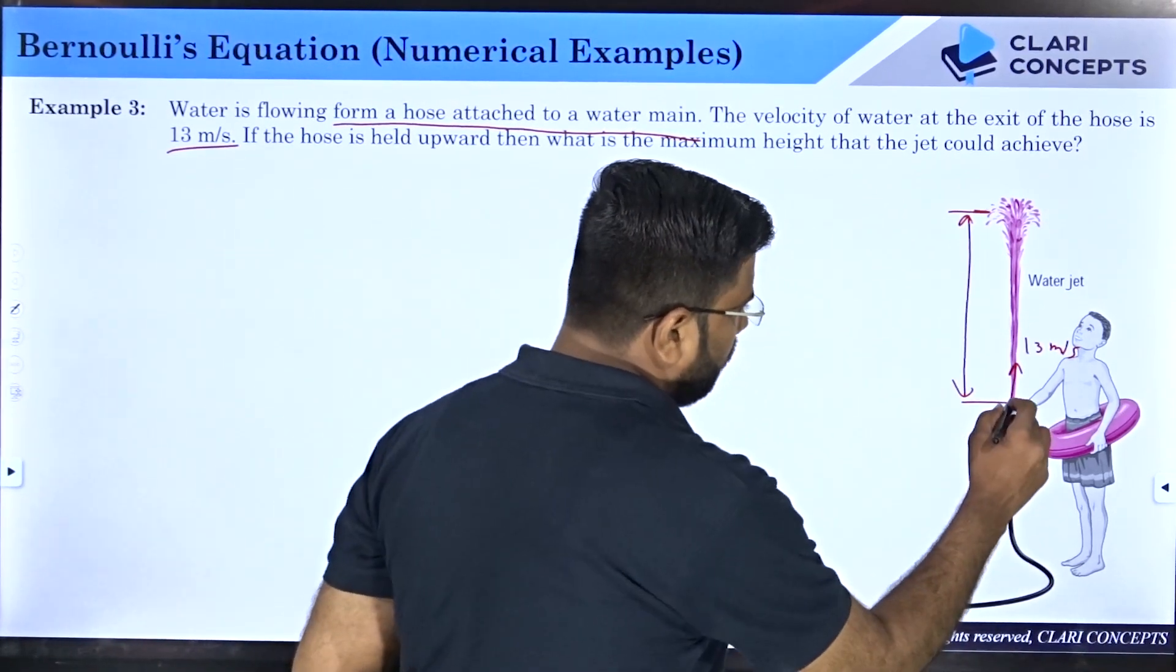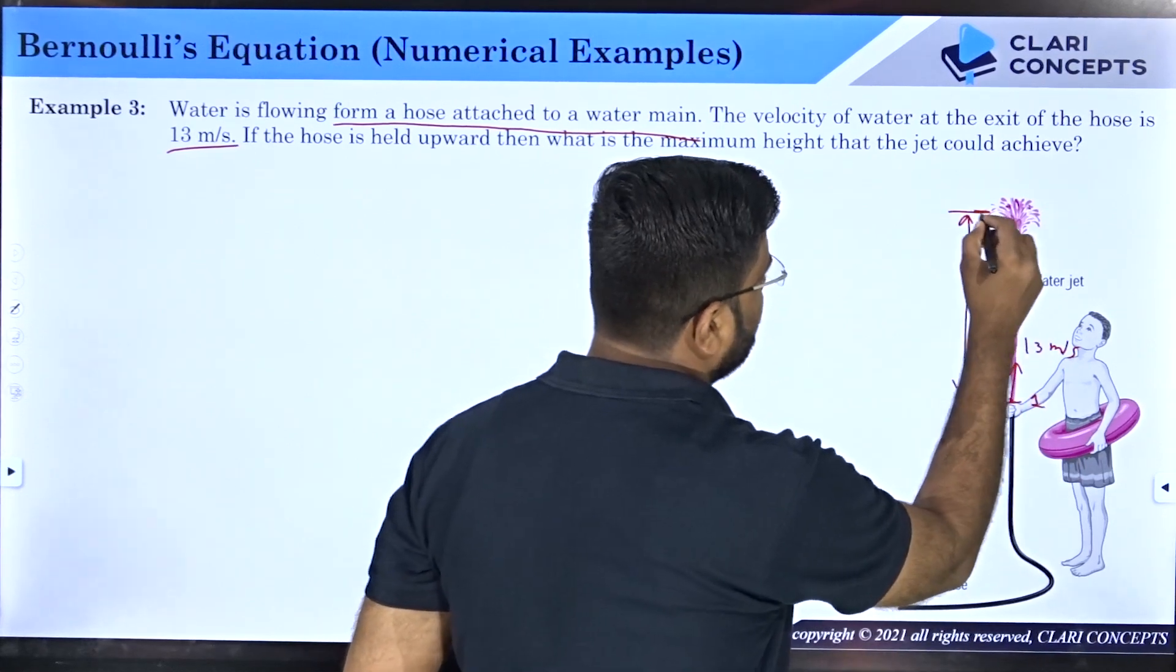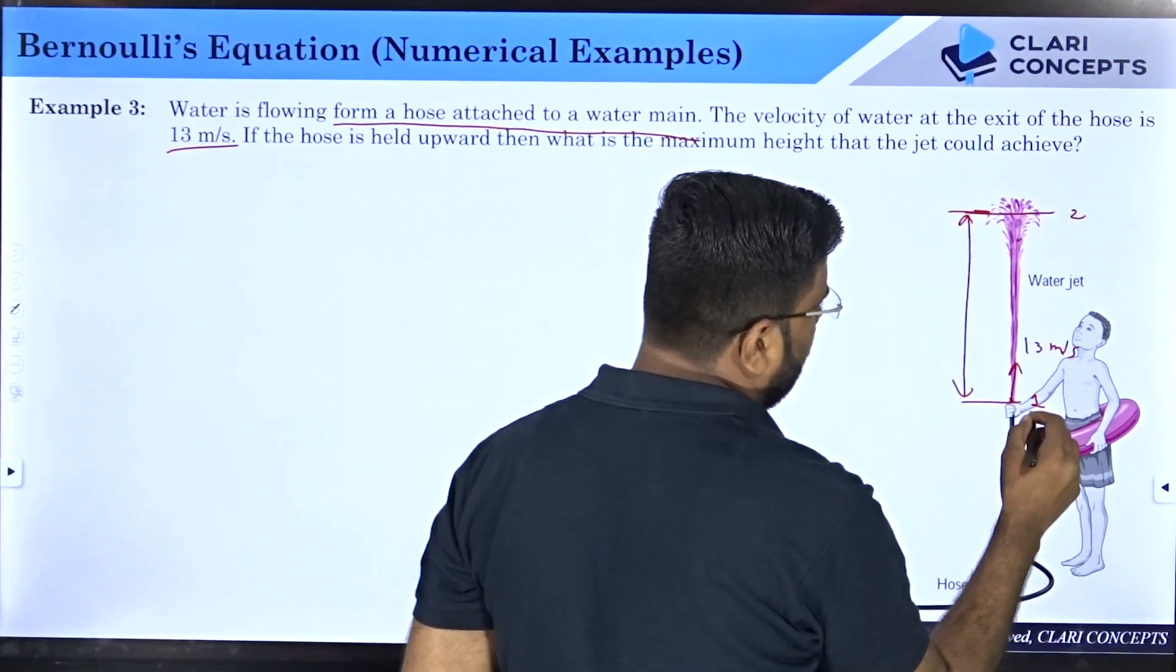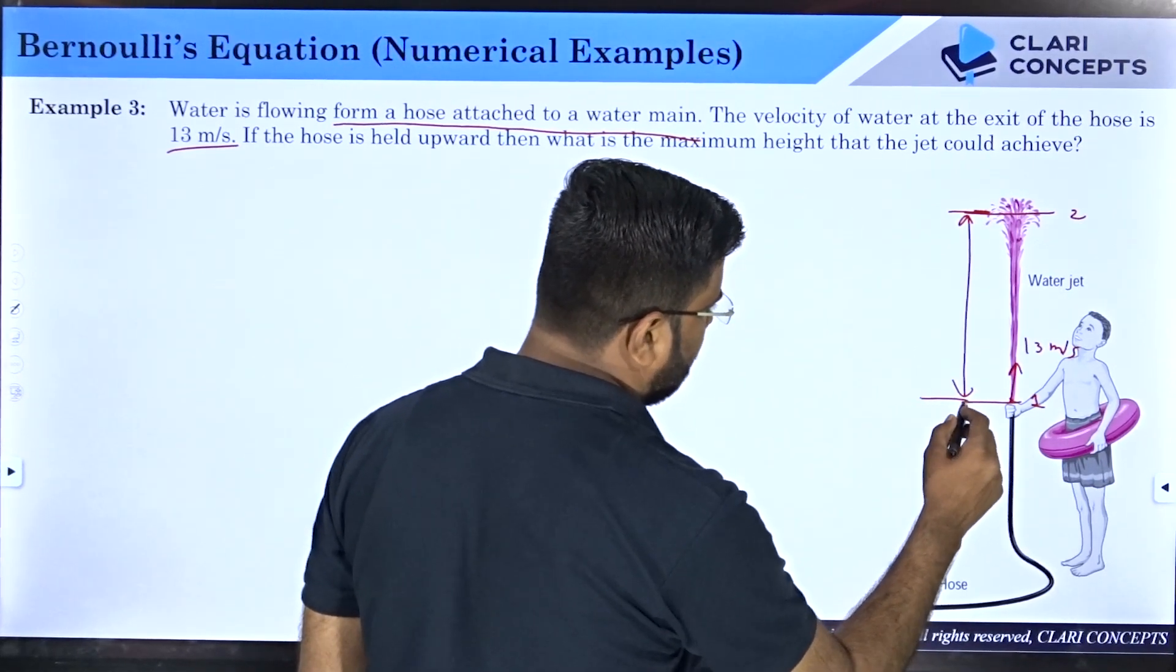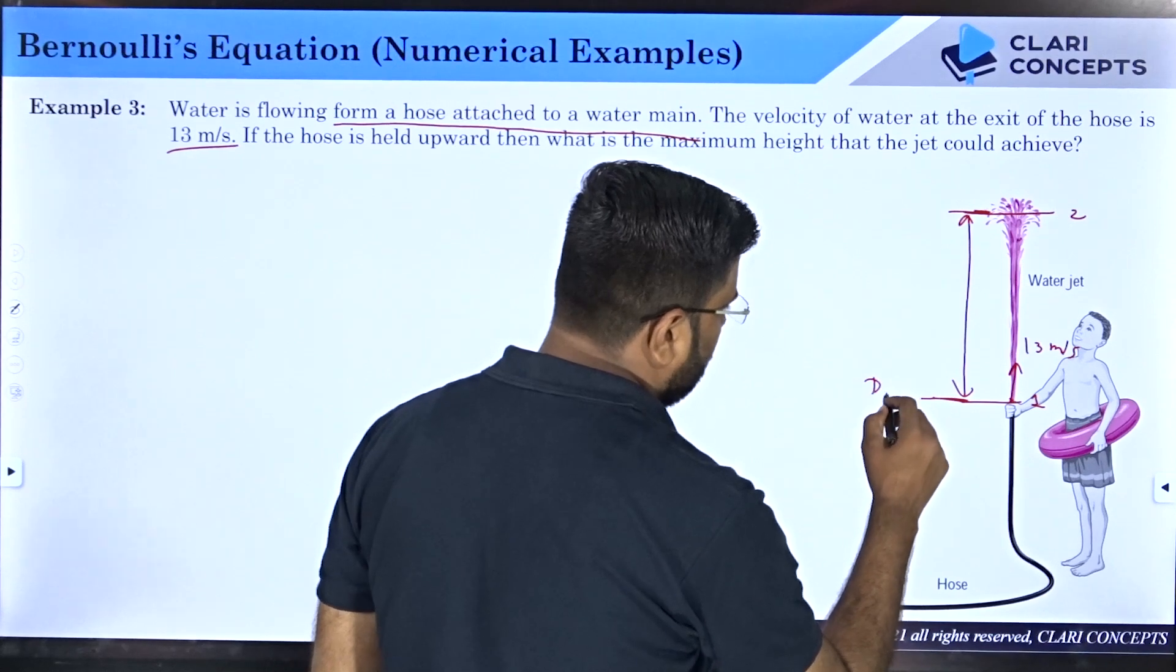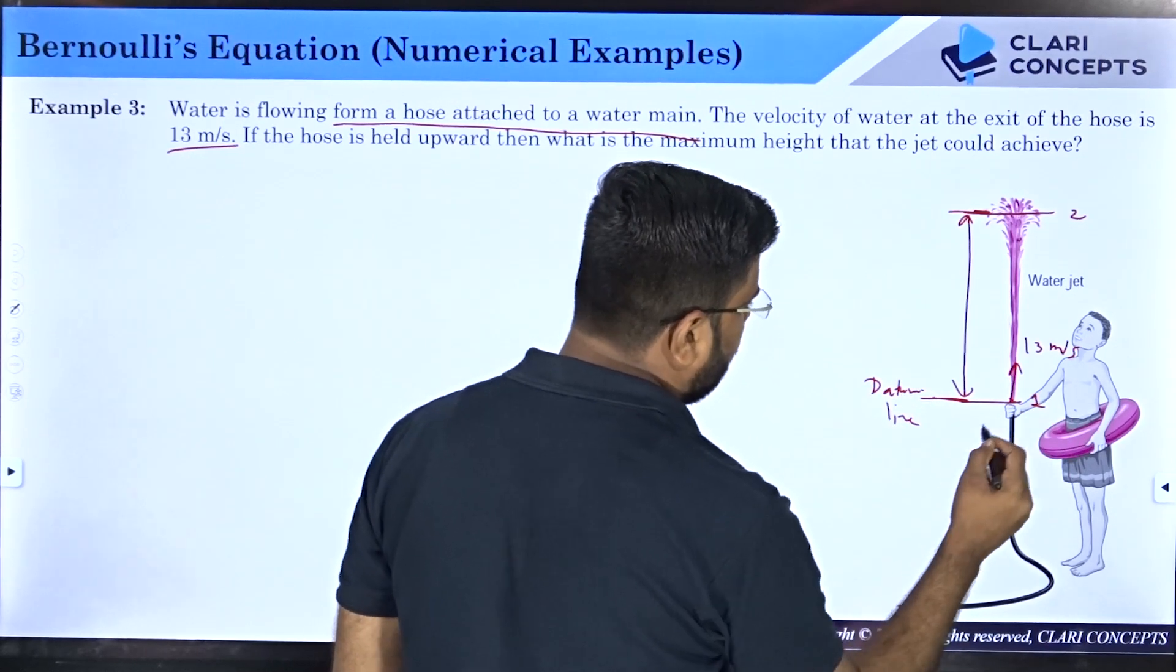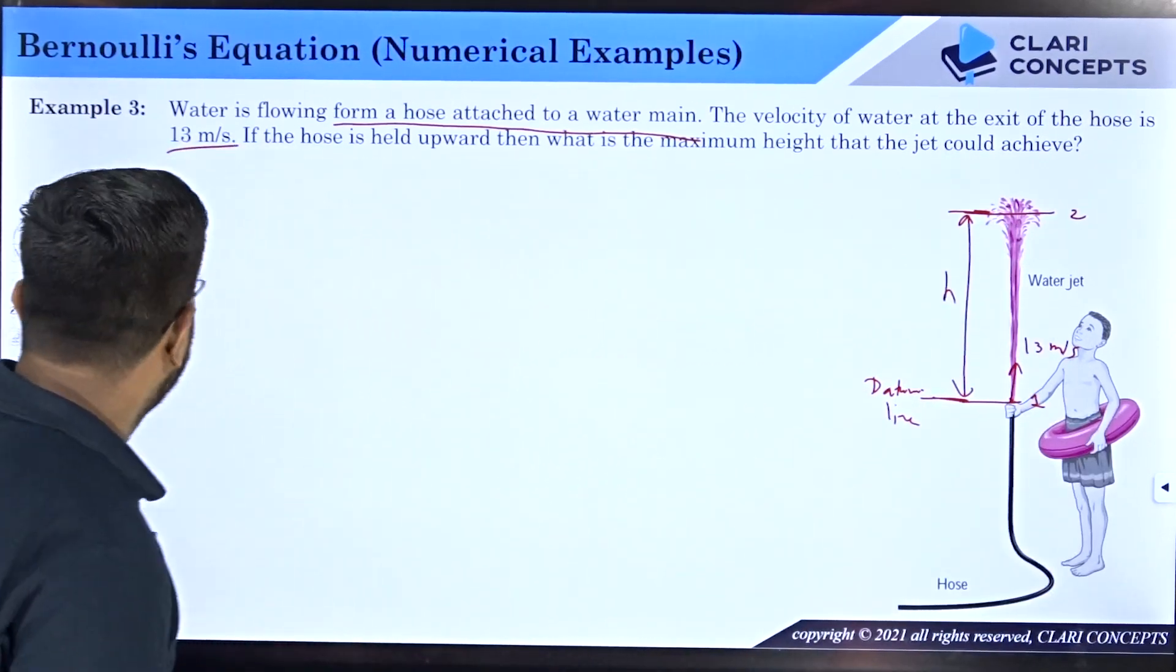Let me deploy Bernoulli's theorem. Let's say this is your point one, section one, and this is your section number two. At this section I will deploy Bernoulli's theorem. If I take this to be the datum line directly, that means z1 will go to zero and the height is small h.